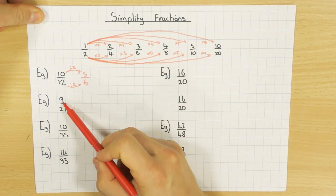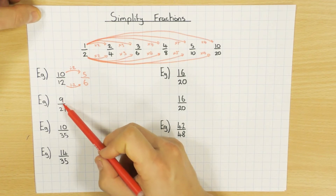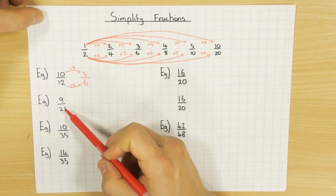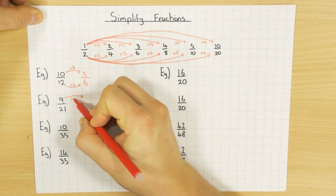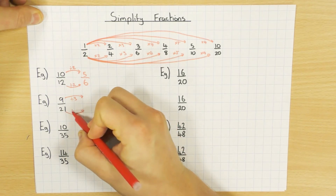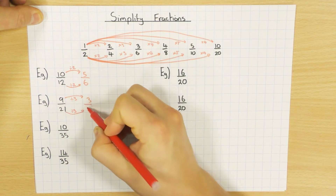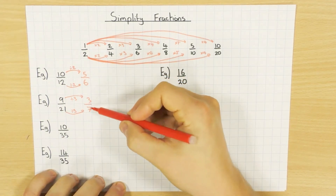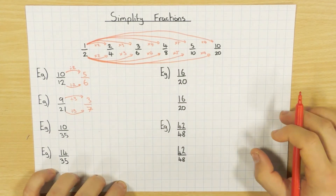Same thing here. 2 doesn't go into 9, so 2 is out of the equation. But is there another number that goes into 9 and 21? This is where your times tables come in handy, because hopefully you could spot that 3 does. So I divide both top and bottom by 3: 9 divided by 3 is 3, and 21 divided by 3 is 7. There's not a number that goes into 3 and 7, so I can stop there — it's in its simplest form.